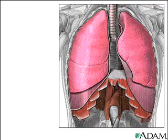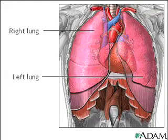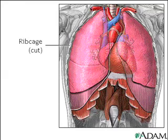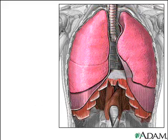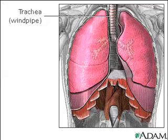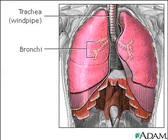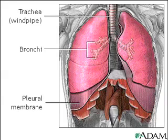The two lungs are the primary organs of the respiratory system. They sit to the left and right of the heart within a space called the thoracic cavity. The cavity is protected by the ribcage and has a sheet of muscle called the diaphragm as its floor, separating it from the abdominal cavity. Other components of the respiratory system such as the trachea or windpipe and bronchi conduct air to the lungs, while the pleural membranes and the pleural fluid allow the lungs to move more smoothly within the thoracic cavity.